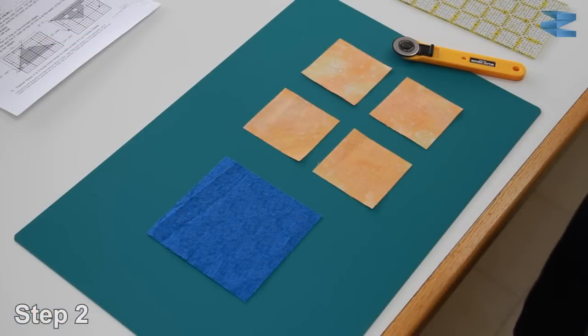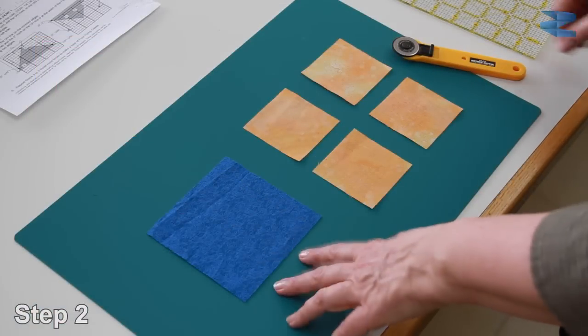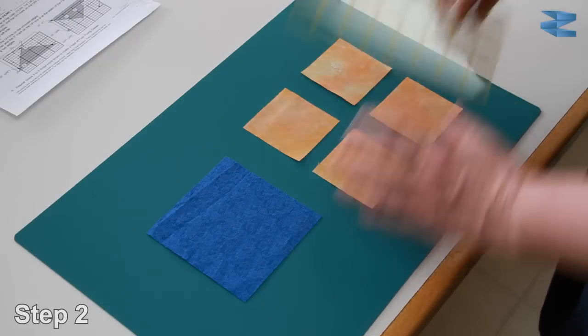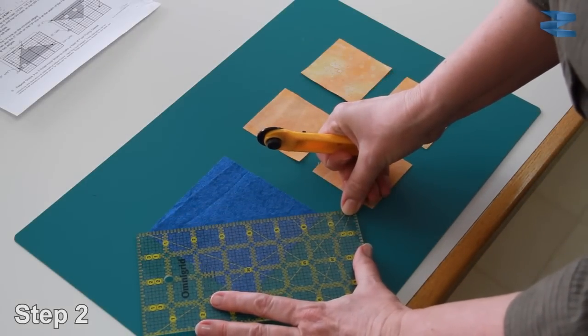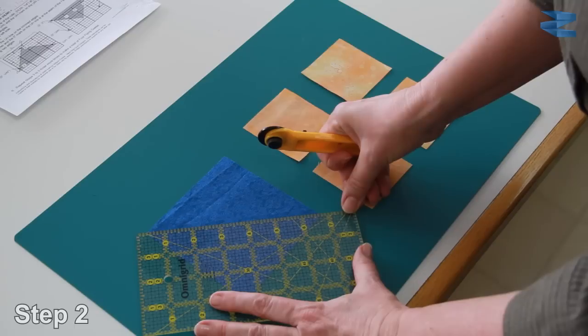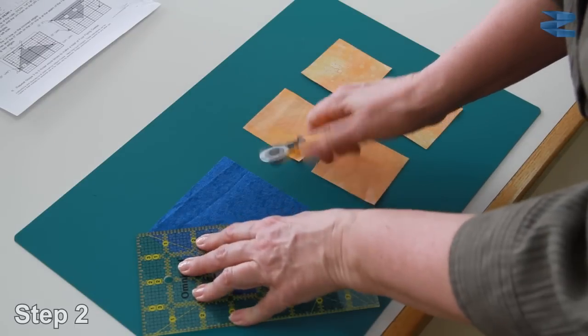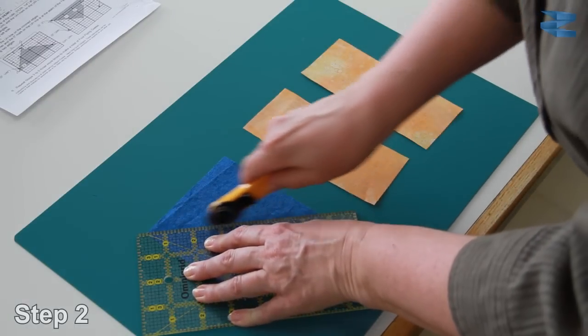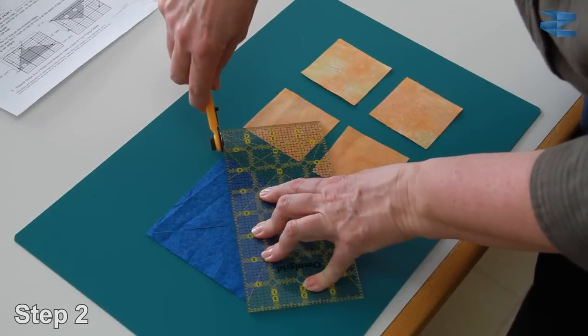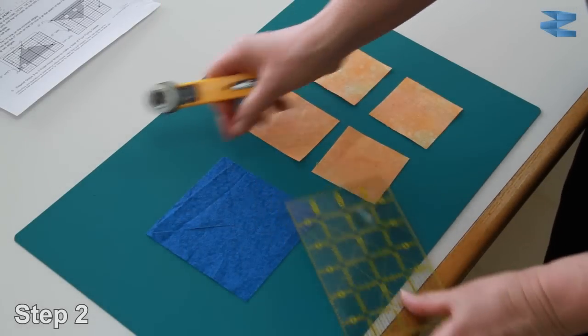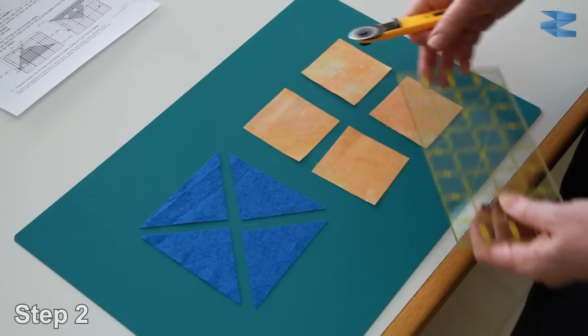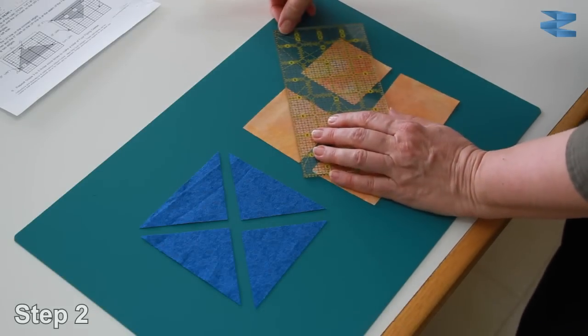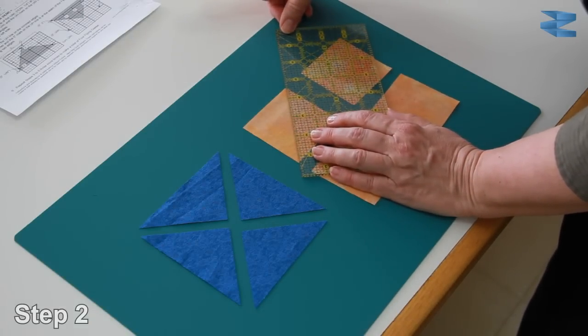Now we cut the 1 large square diagonally in half in both directions. So you have to line the ruler up with the corners. So now we have cut it into 4. And now we cut the 4 orange squares only in half.